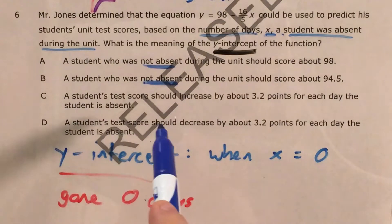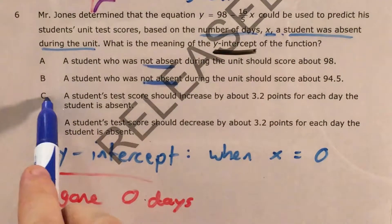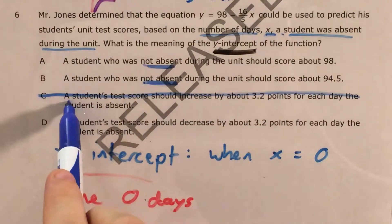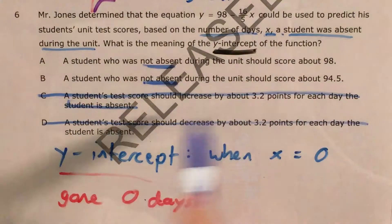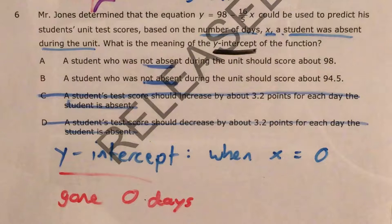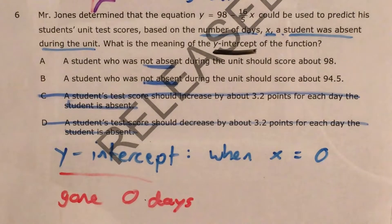Now C and D, neither of them say anything about being gone 0 days. They do say something about every day that they are gone, but they don't specifically mention what happens when the student's gone 0 days. Now I tend to overthink questions like this,